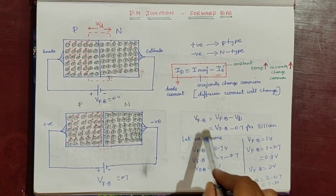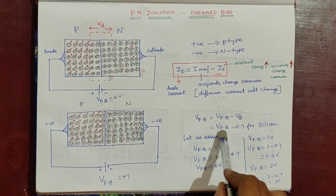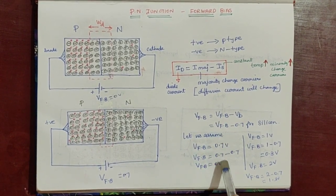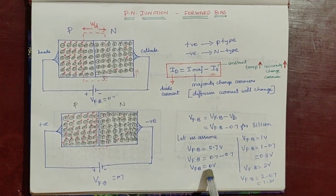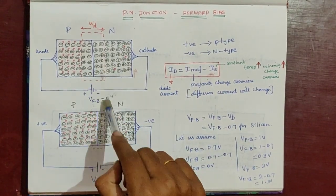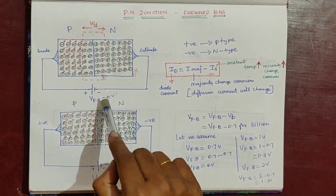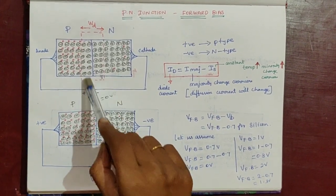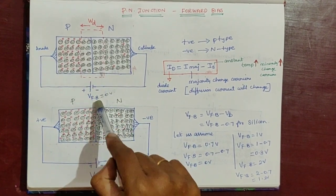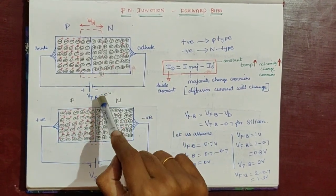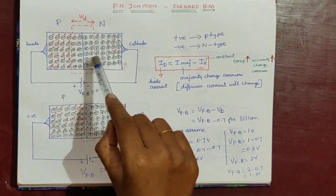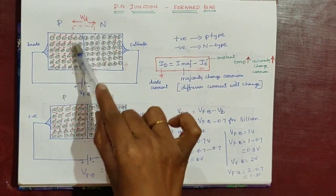Let's assume that the built-in voltage V_bi is equal to 0.7V. If we apply 0.7V as the forward voltage, then 0.7 minus 0.7 equals 0 — the net forward voltage across the junction is 0. At no bias condition, forward voltage is 0V and the barrier voltage is 0.7V. So if we apply a forward voltage of 0.7V, we cancel the built-in voltage.